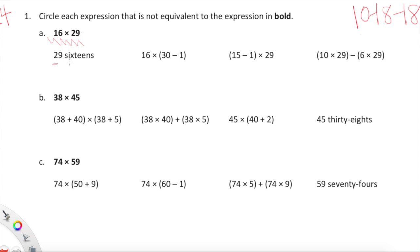29 sixteens? Yes, absolutely. We know that in multiplication we can rewrite these as 16 times 29 or 29 times 16. 16 times 30 minus 1? What is 30 minus 1? 30 minus 1 is 29, so we have 16 times 29, bingo. Here we have 15 minus 1, which is 14, so that's 14 times 29, and that does not work.